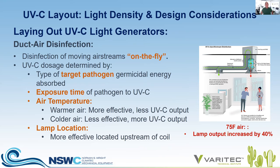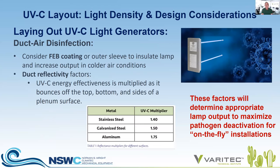Some other duct air disinfection considerations: do you want to use FEP coating or outer sleeve to insulate the lamp and increase output in colder air conditions? Another factor is duct reflectivity — stainless steel, galvanized steel, and aluminum reflect UVC light at different intensities. If you select a dosage, we'd want to know what type of casing surrounds the device so we can add an extra 40 to 50 percent to the overall output due to the reflectivity factor, making it more effective than its assigned lamp output.